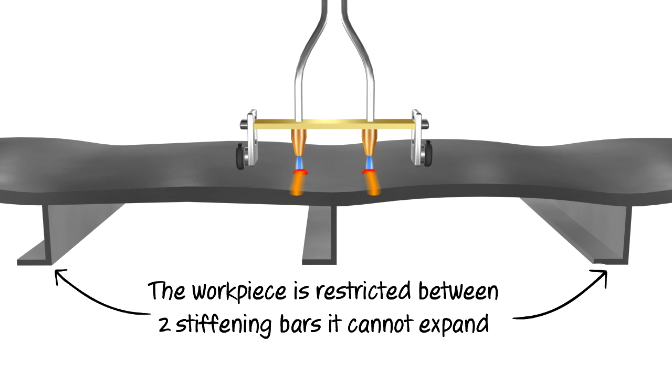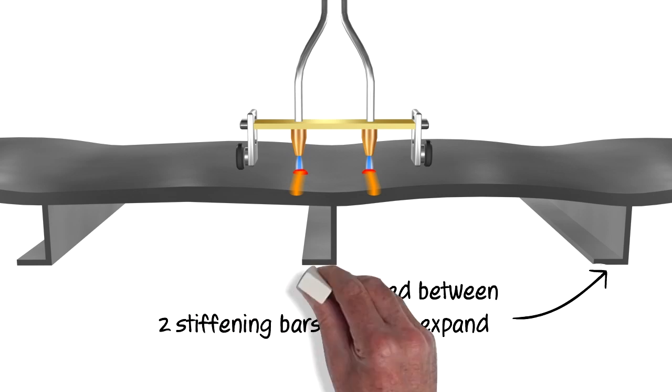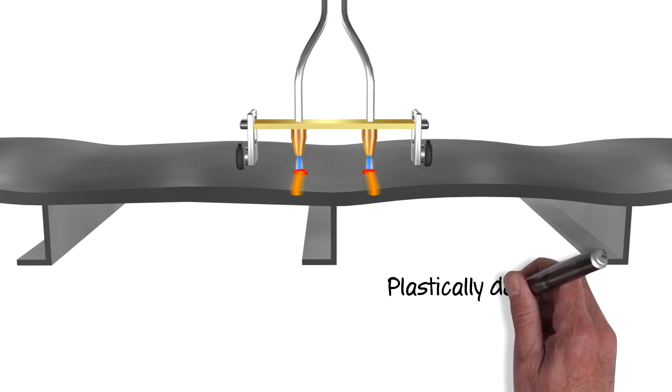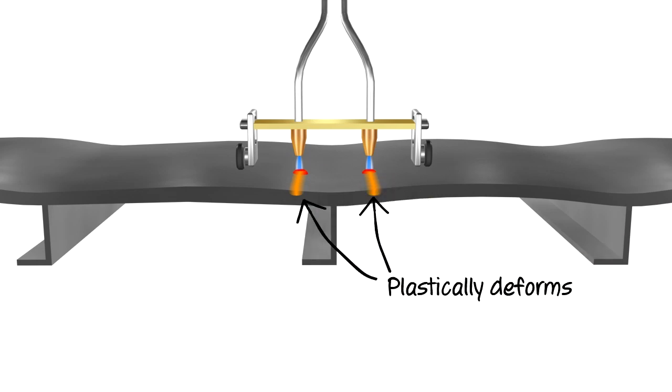However, because the workpiece is restricted between the bars, or for larger pieces its own strength of rigidity, the material cannot expand beyond a certain point and therefore plastically deforms and upsets. You can see in the centre here where this has occurred.